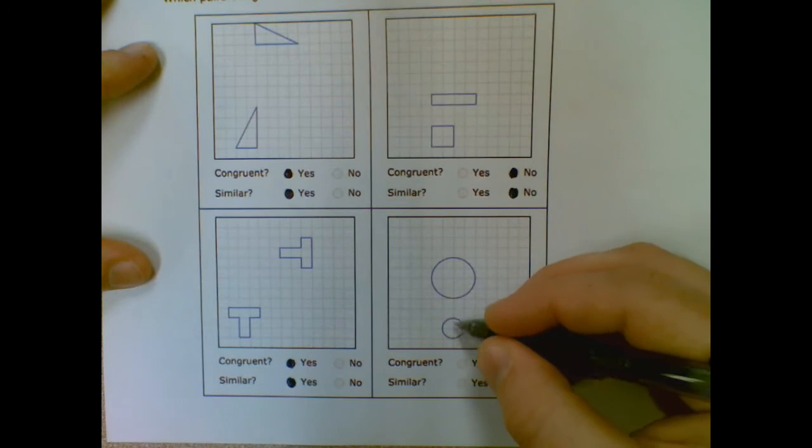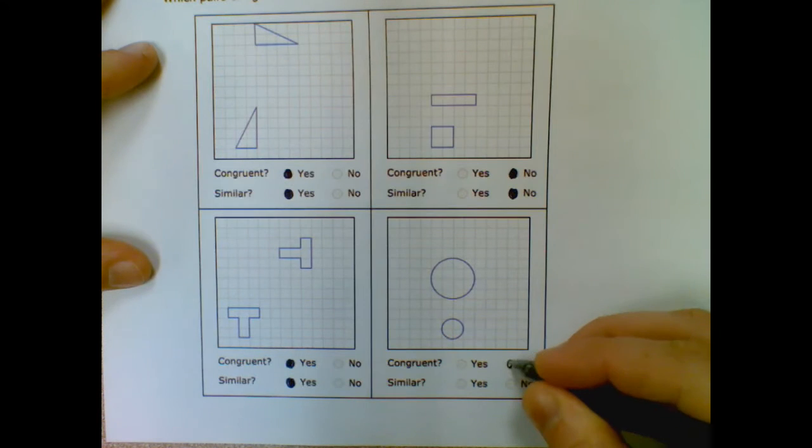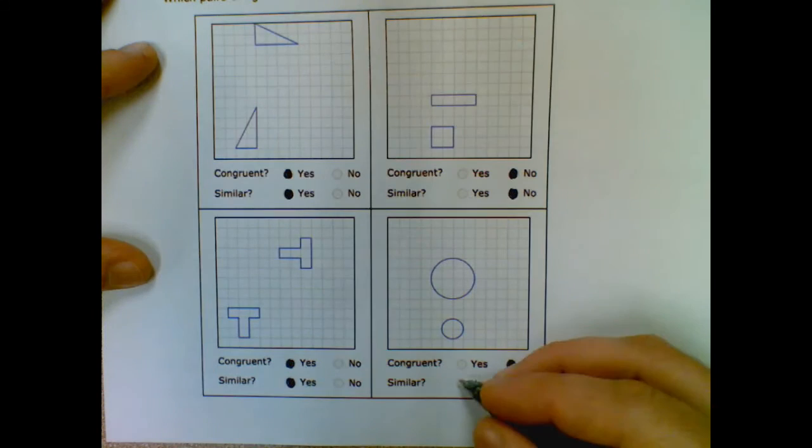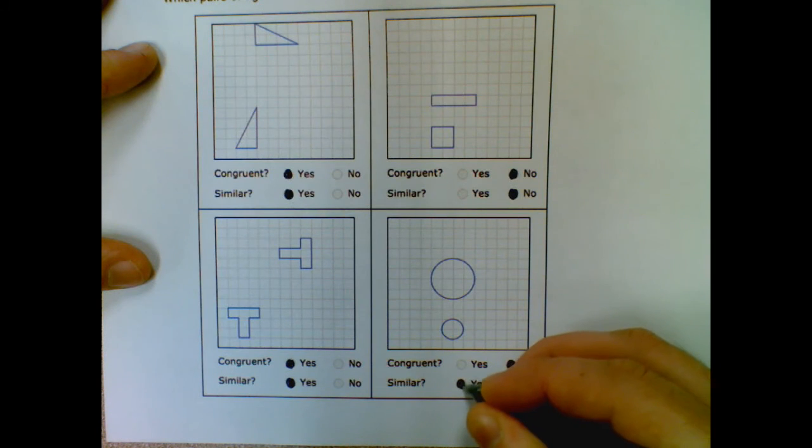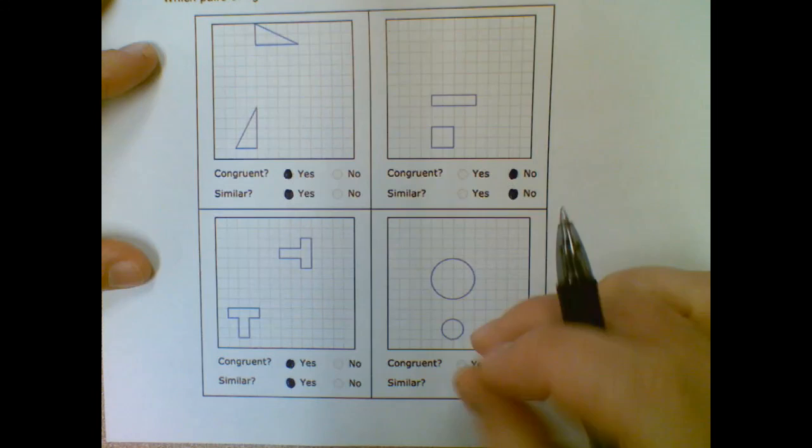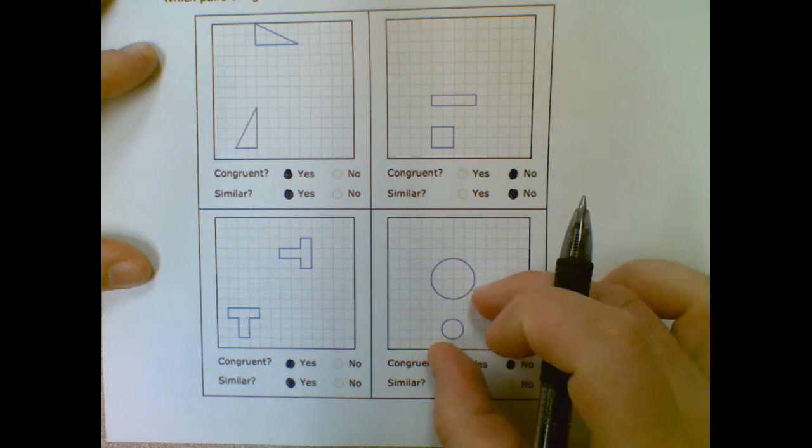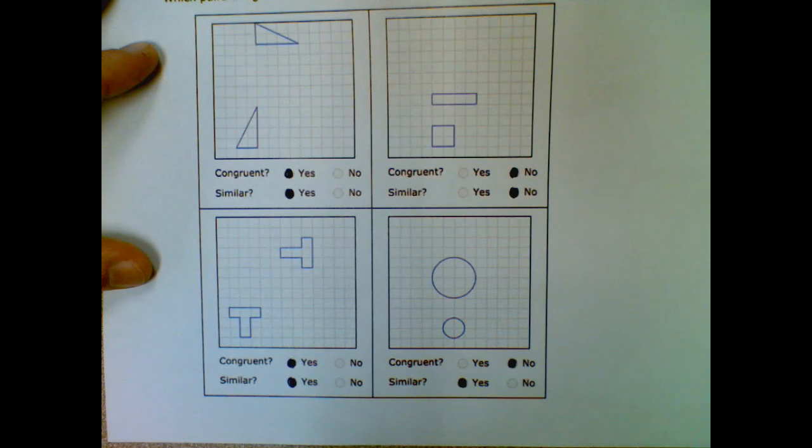These are not congruent, because this is a circle with a radius of one, this is a radius of two, but they are both circles, and they, so they are actually similar, because they are the same shape, they're just different sizes. So if I expanded this one out, kind of zoomed out, you could put that and it would match perfectly, so they are similar.